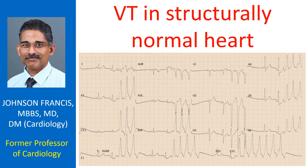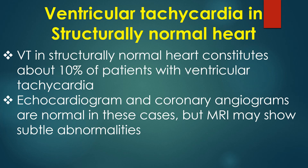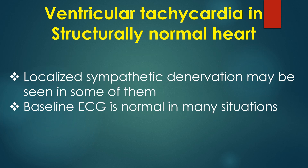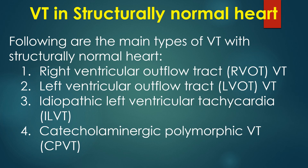This is a discussion on ventricular tachycardia in the structurally normal heart. VT in structurally normal heart constitutes about 10% of patients with ventricular tachycardia. Echocardiogram and coronary angiograms are normal in these cases, but MRI may show subtle abnormalities. Localized sympathetic denervation may be seen in some of them. Baseline ECG is normal in many situations. The following are the main types of VT with structurally normal heart.